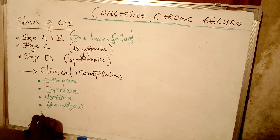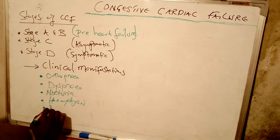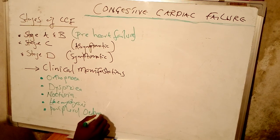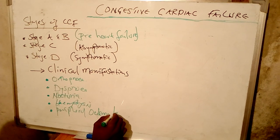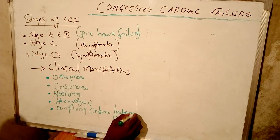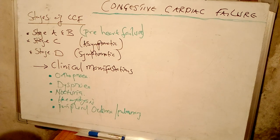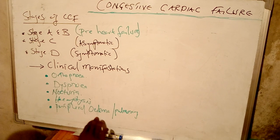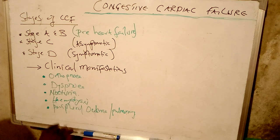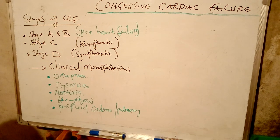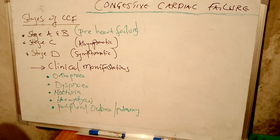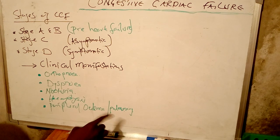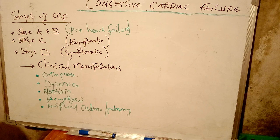The patient will also have peripheral edema as well as pulmonary edema. Peripheral edema occurs because of backflow of blood into the veins, causing increased capillary permeability, making the peripherals edematous. There will also be pulmonary edema due to movement of fluid from the intravascular compartment into the interstitial space in the lungs.